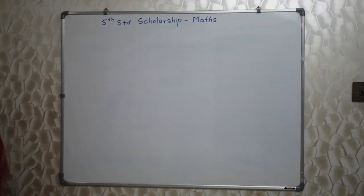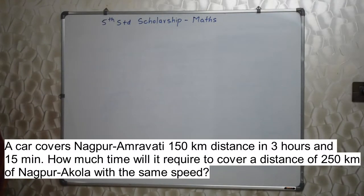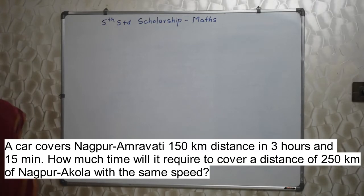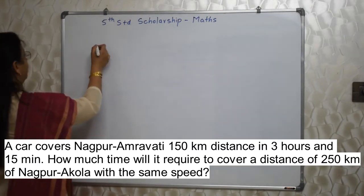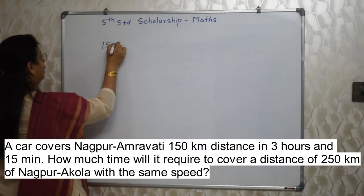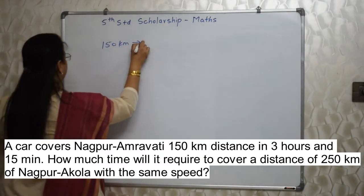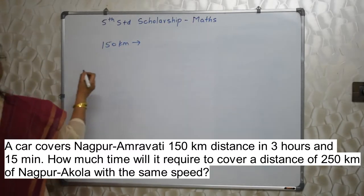The first sum will appear on your screen. A car covers the Nagpur-Amravati 150 km distance in 3 hours and 15 minutes. How much time will it require to cover a distance of 250 km of Nagpur-Apola with the same speed? Basically, they have given distance and time: 150 km covered in 3 hours and 15 minutes.